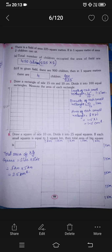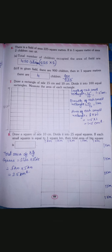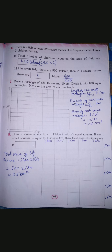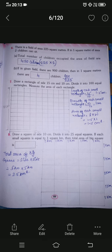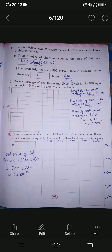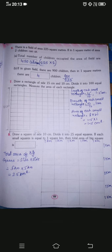For question 8, they ask us to draw a square of side 10 centimeter. We know all sides of a square are equal, so all four sides will be 10 centimeter. Take your scale and draw a 10 centimeter square — all sides should be 10 centimeter. Next, divide it into 25 equal squares, meaning 25 equal squares should fit inside this big square.